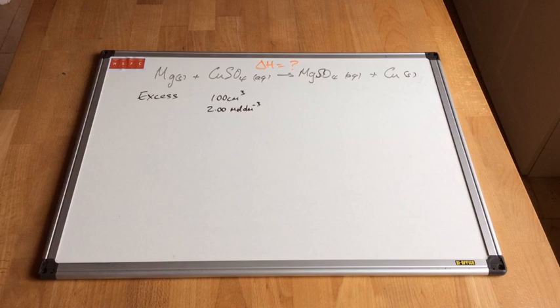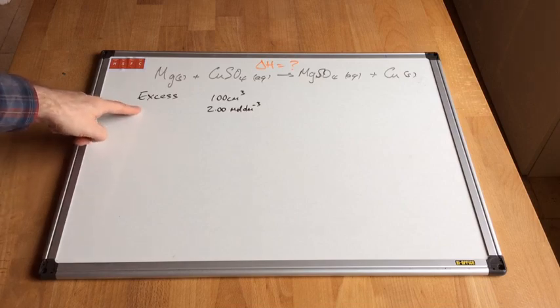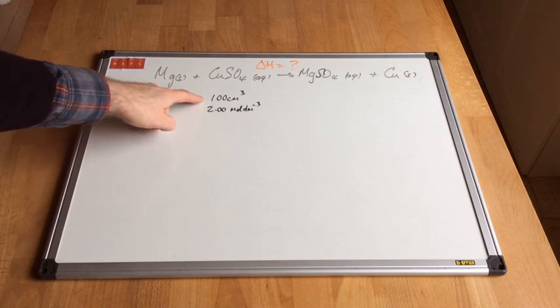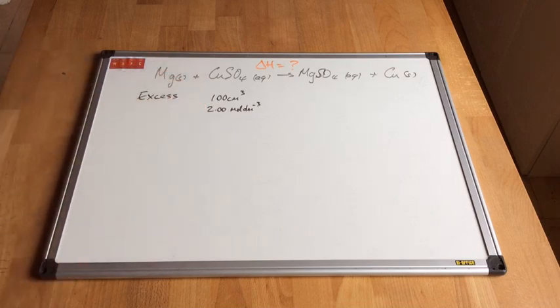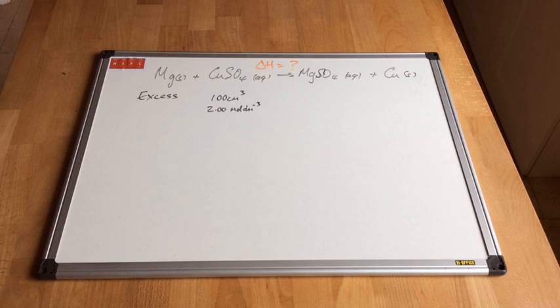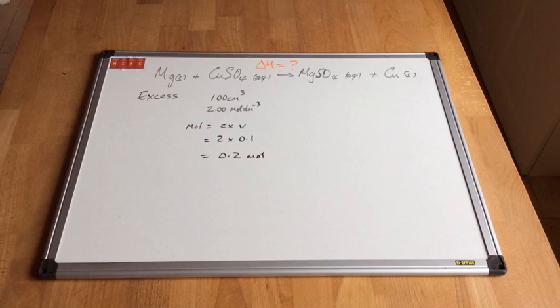The first thing to point out is we're going to use an excess of magnesium, and we're going to use 100 centimetres cubed of 2 moles per decimetre cubed solution of copper sulphate. We'll use this information later in the calculation. Moles equals concentration times volume. The concentration is 2 moles per decimetre cubed and the volume must be in decimetres cubed — 0.1 dm³ — giving us 0.2 moles of copper sulphate.